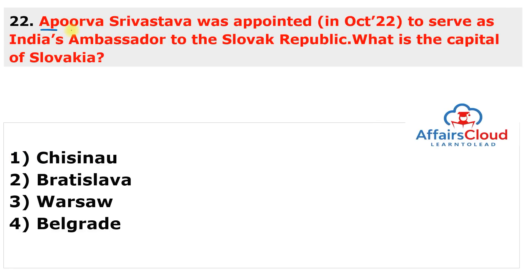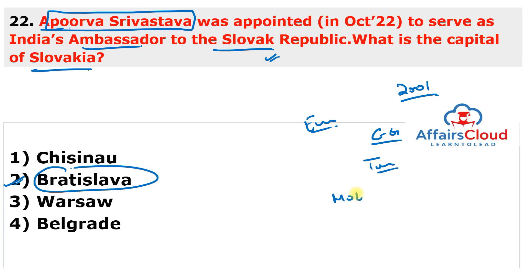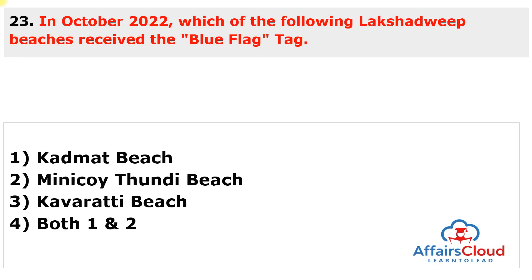Next question: Apurva Shrivastava was appointed as India's Ambassador to the Slovak Republic. What is the capital of Slovakia? The capital is Bratislava, and the currency is Euro. Indian Foreign Service officer Apurva Shrivastava has been appointed as India's Ambassador to the Slovak Republic. She is an officer of the 2001 batch and currently serves as Consul General at the Indian Consulate in Toronto. Prior to this, she served in the Ministry of External Affairs and was posted in Kathmandu and Paris, among other locations.